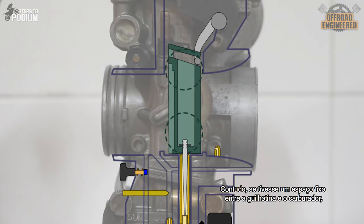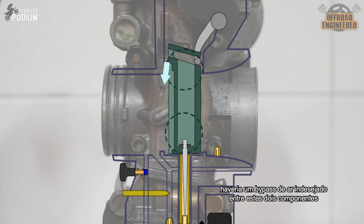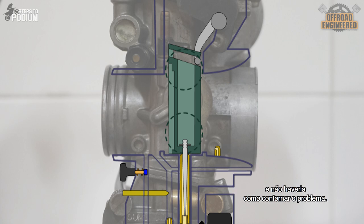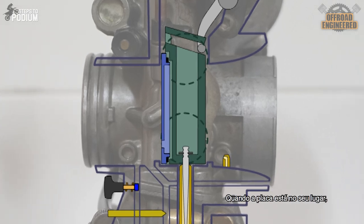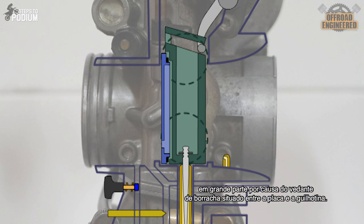However, by having a slide with a fixed cap between the carb and the slide, there would be an unwanted air bypass between these two components and there wouldn't be any way to get around it. This is where the vacuum release plate gets the job done. When the plate is in its place, there is only a minor play between the slide and the carb, mostly thanks to the rubber seal on the inside that acts like an air valve.